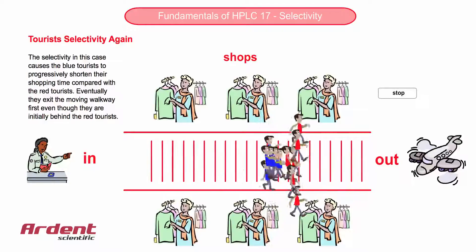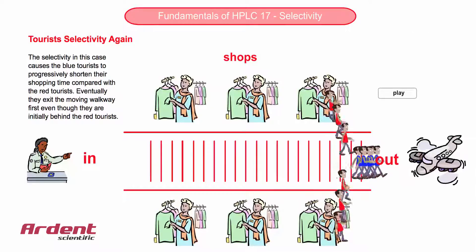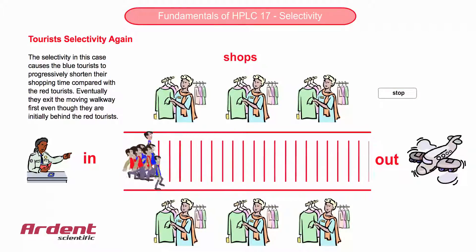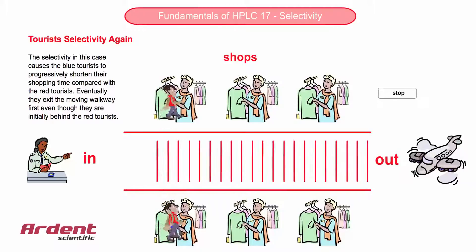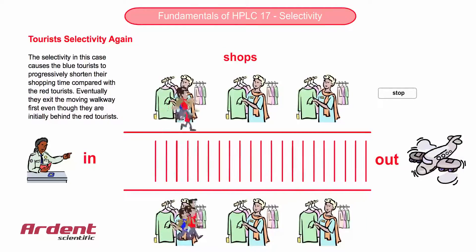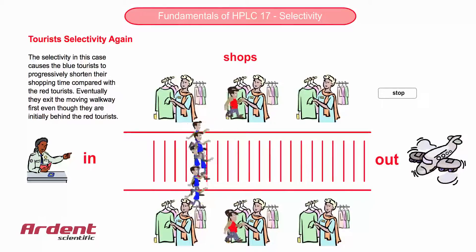Again, the rules have changed after the tourists have already stepped on the moving walkway. In this case, it might be that the red tourists are heading back on the plane, back to a cold climate, and the shops have started having a coat sale, resulting in the red tourists spending more and more time in the shops compared to the blue tourists.